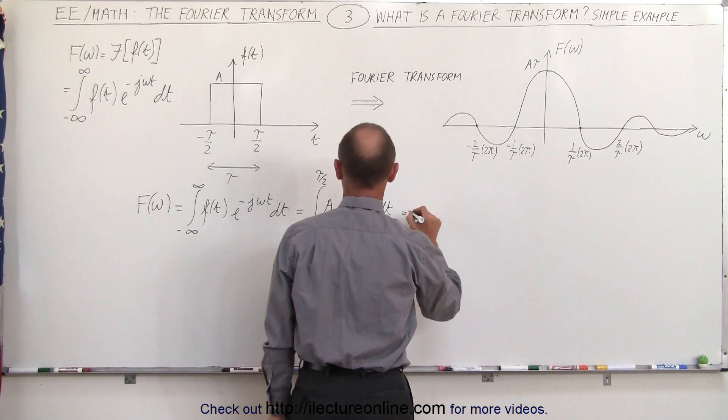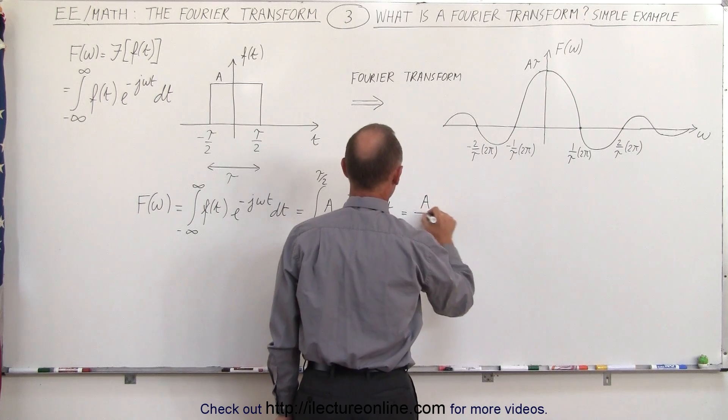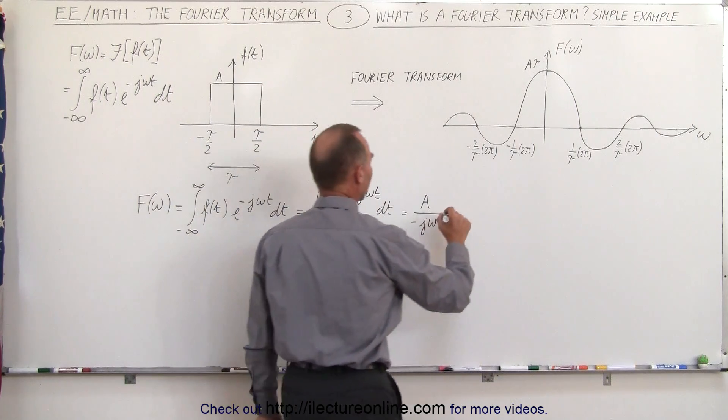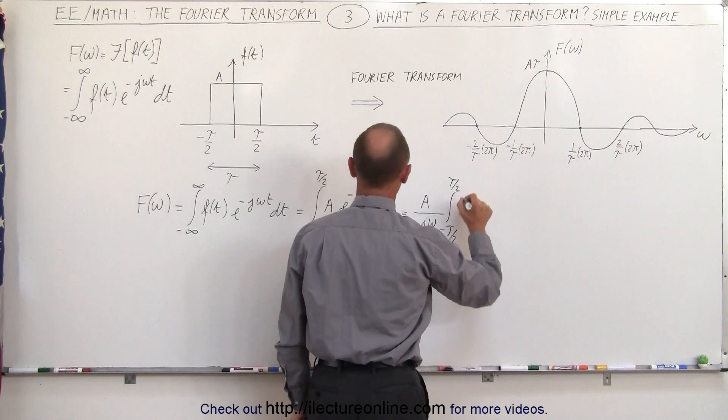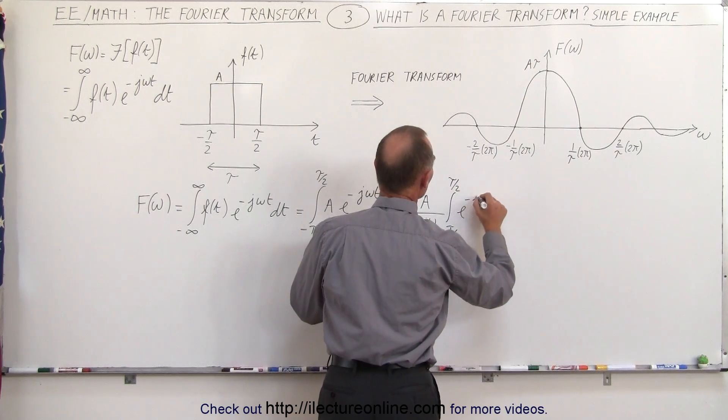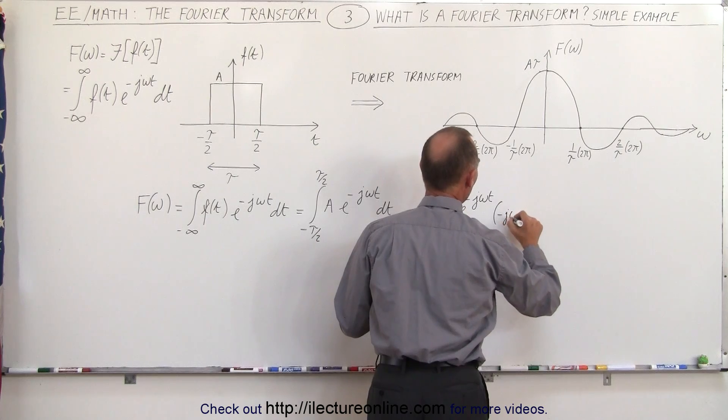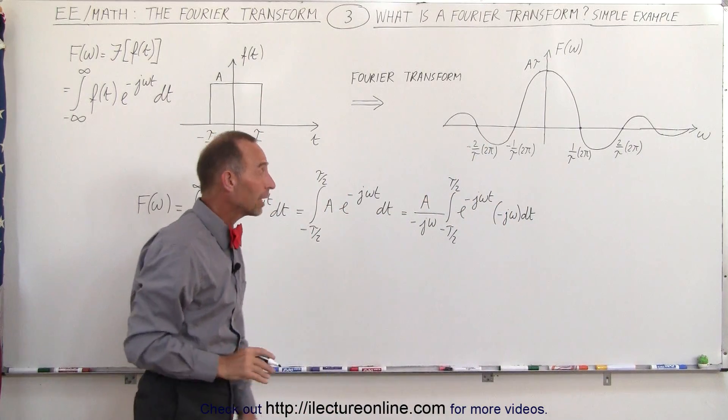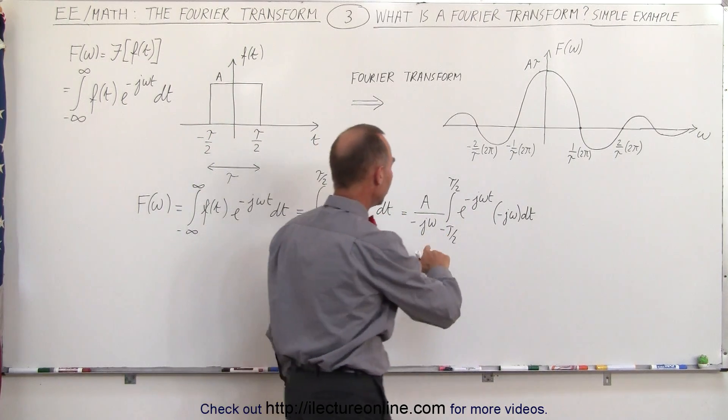So this is equal to, we still have the A divided by minus j omega times the integral from minus tau over 2 to tau over 2 of e to the minus j omega t times d dt. So I want to show you that that also works when you have a complex number in the exponent. So now we can do the proper integral.